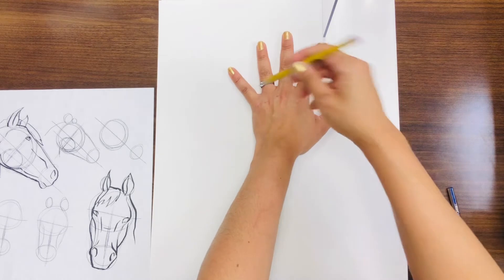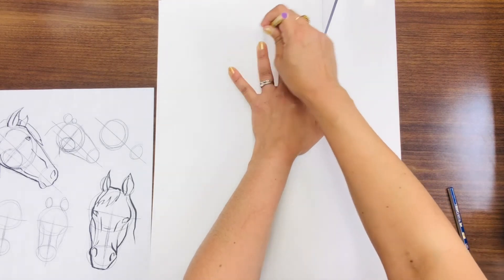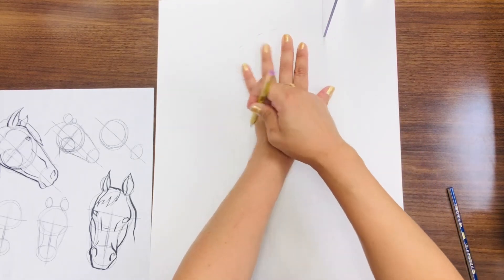Trace your hand to make a large circle on your paper. That large circle will be the top of the horse's head.